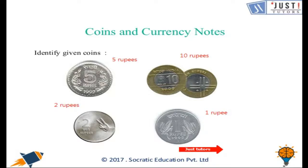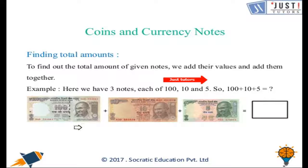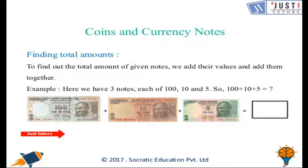Now let's move ahead and learn how to find the total amount. If we need to find the total amount of the given notes, we can add their values. Here we have 3 notes: a 100 rupee note, a 10 rupee note, and a 5 rupee note. If we add all of them, we will get 115 rupees.